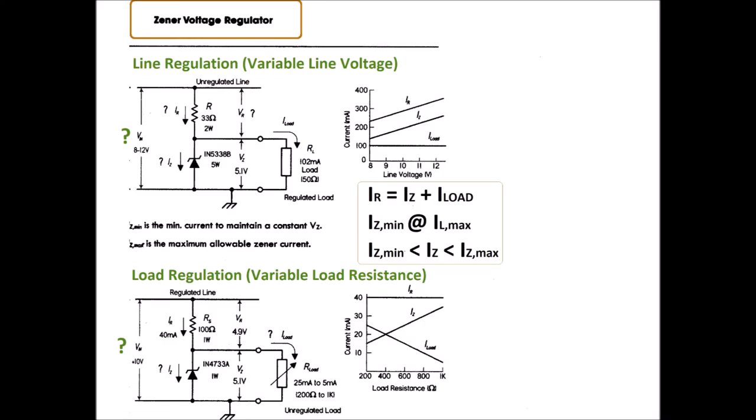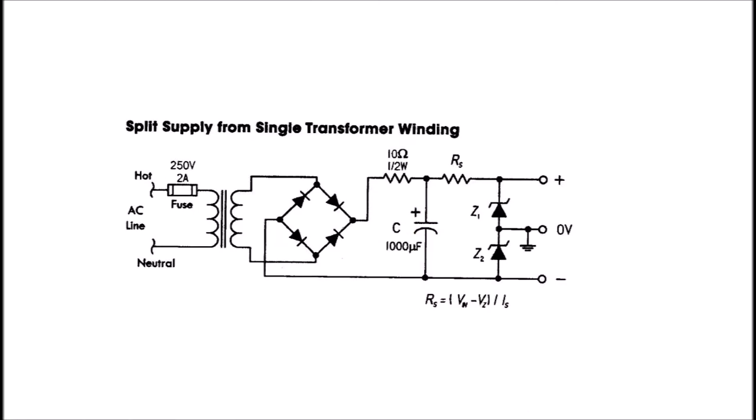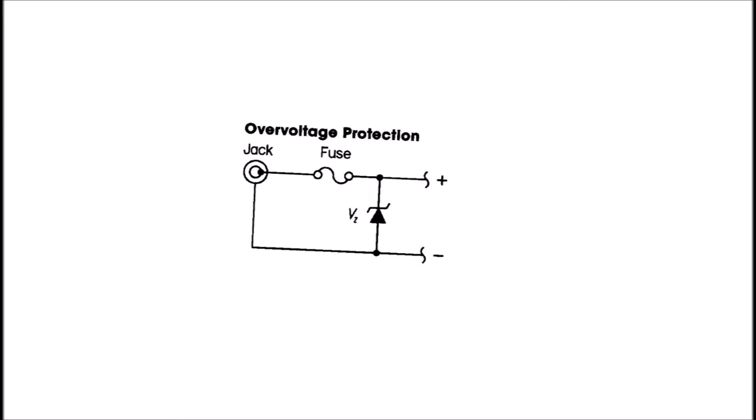Zener diodes are used to generate low power stabilized supply rails from a higher voltage and to provide reference voltages for circuits, especially stabilized power supplies. They are also used to protect circuits from overvoltage, especially electrostatic discharge, ESD.